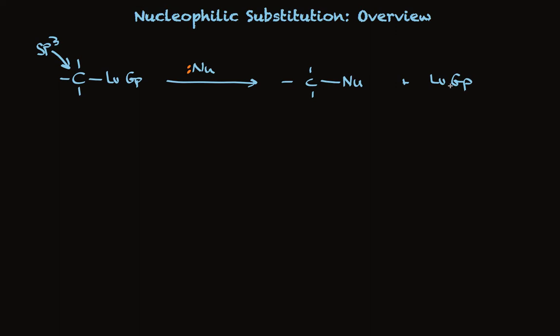The things that can vary are the structure of the organic compound itself, what's attached to carbon, the leaving group, what it is, and the nucleophile. There's a wide range of nucleophiles that are possible. We'll talk about the changes in all of these things and what that means.